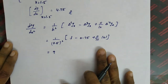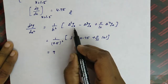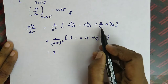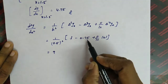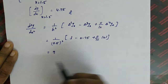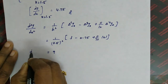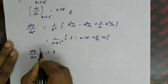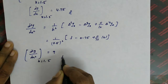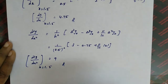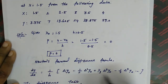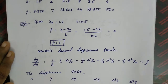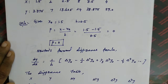Likewise we find d²y/dx². The formula is (1/h²)[Δ²y₀ minus Δ³y₀ plus (11/12)Δ⁴y₀]. Substituting: h is 0.5, Δ²y₀ is 3, Δ³y₀ is 0.75, and Δ⁴y₀ is 0. Therefore d²y/dx² at x equal to 1.5 is 9. In this problem p equals 0, that is why we used this simplified formula. If p were 1, 2, or some other value, we would have to use a different result.